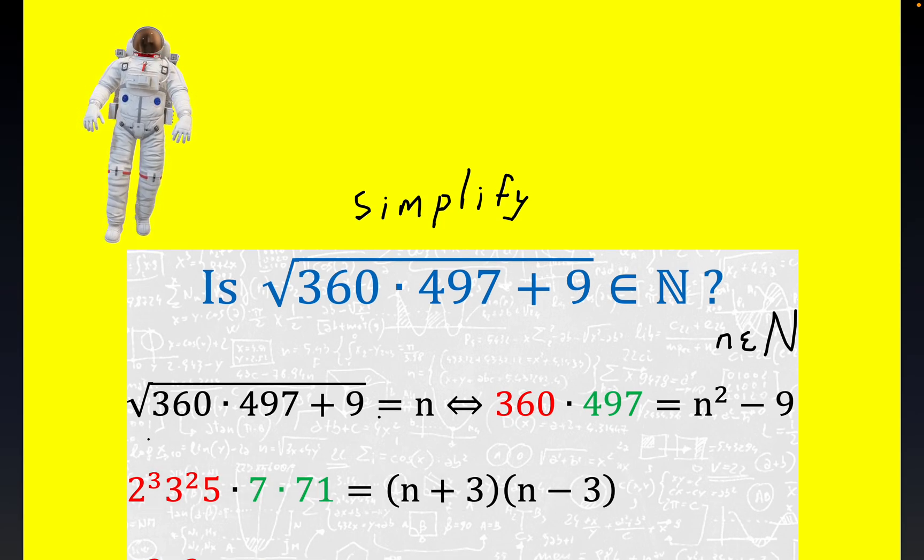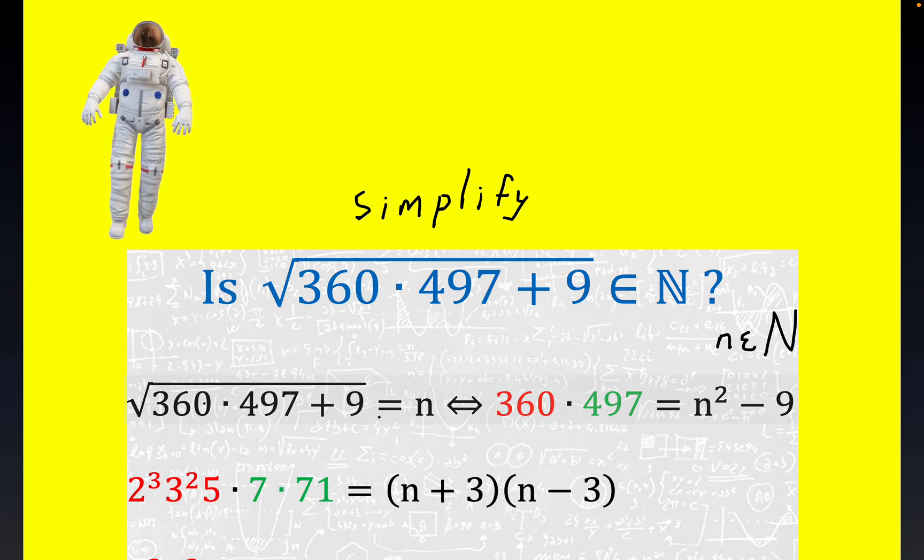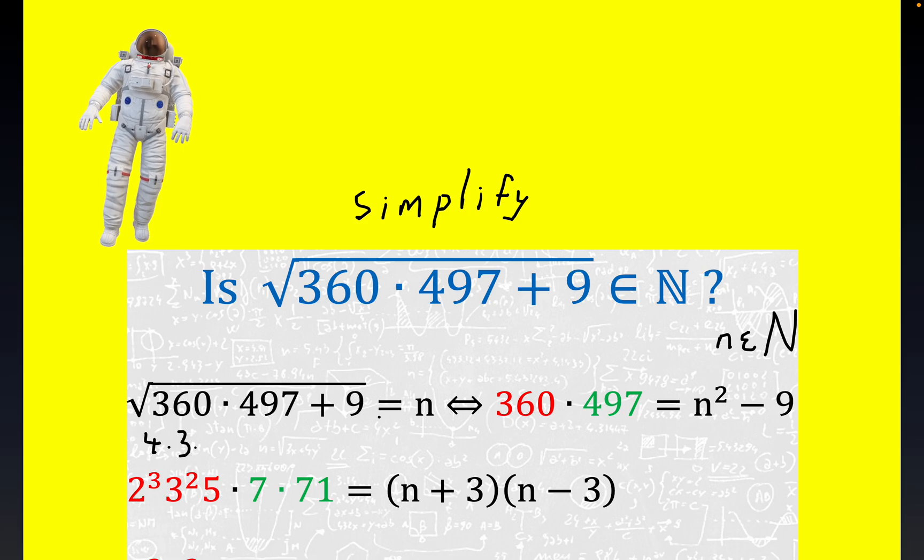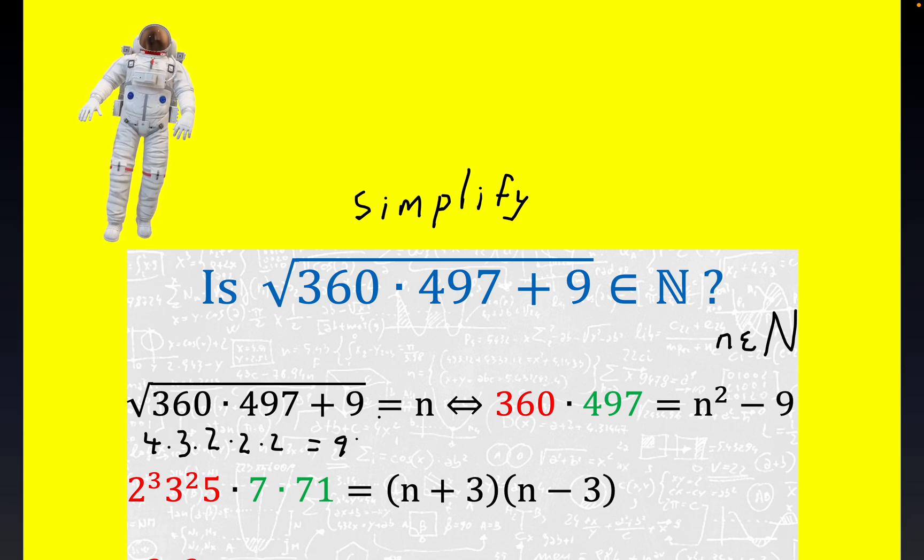Now, something I'd like to point out is that this number, whatever it is, and we don't even know how to say it in Hindu-Arabic, but it has 4 times 3 times 2 times 2 divisors. Now, that's equal to 96. Now, this is not really necessary, but to give you an idea of the task before us,